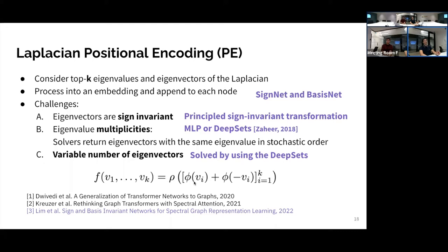We also experimented with SignNet from Derek Lim, which solves sign invariance in a principled way: applying a function to each eigenvector and its negative, then aggregating through an MLP or deep sets — guaranteed to be sign invariant without random flipping. In practice, the phi function is an 8-layer GIN model. This turns the Laplacian positional encoding into a learnable positional encoding that can capture distances between neighboring nodes, effectively becoming a relative positional encoding — or even a hybrid that captures local graph structure.